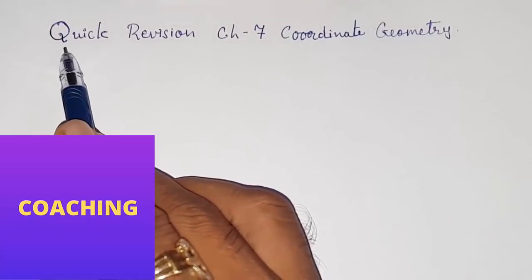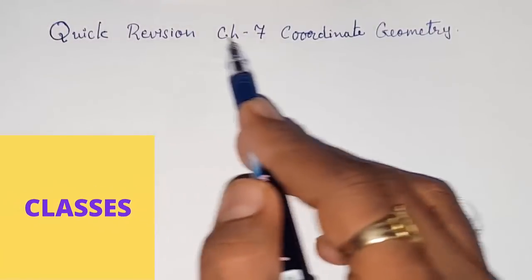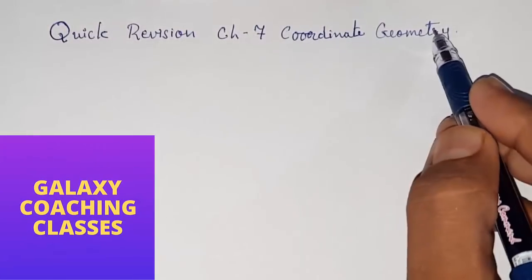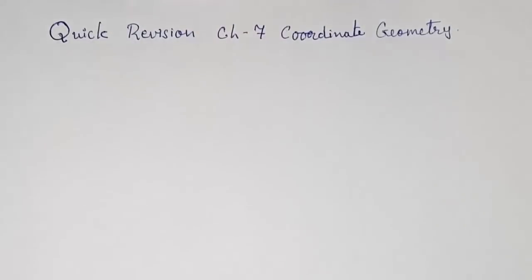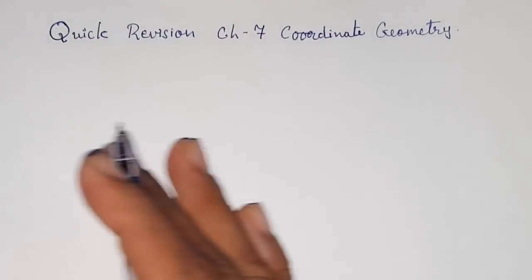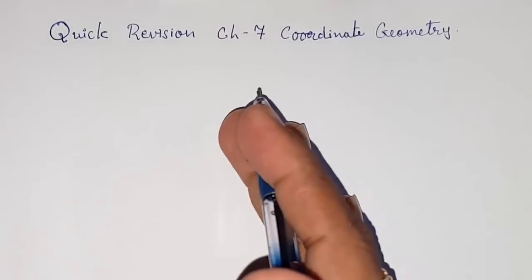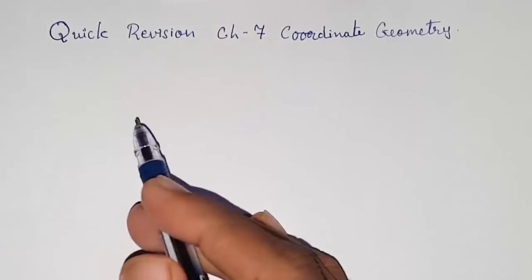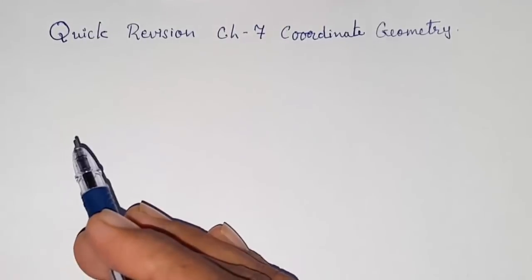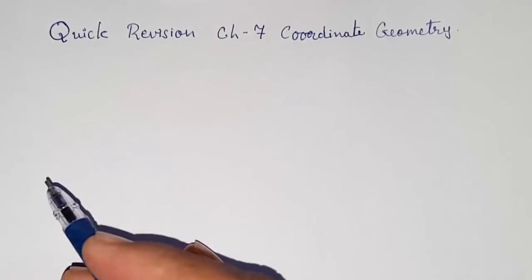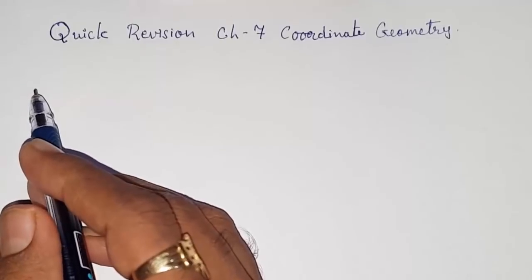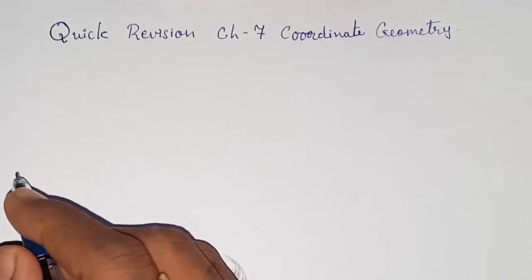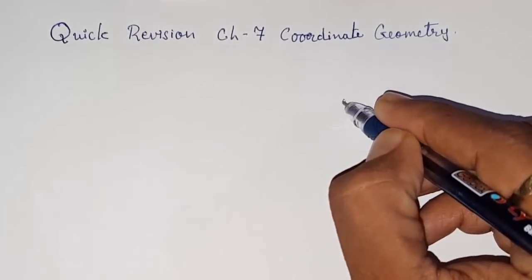Hello friends, today we are going to do a quick revision of Chapter 7: Coordinate Geometry. I will explain all the formulas one by one, and then we will solve important sums from the NCERT textbook. Let us start with our first formula, that is the distance formula.